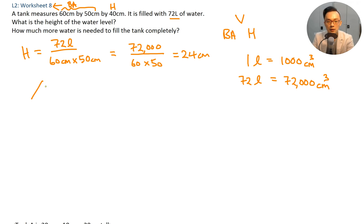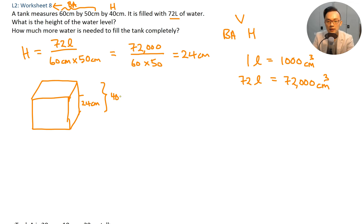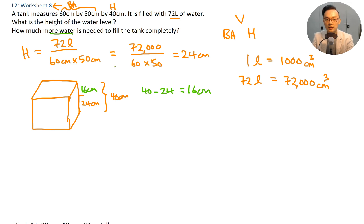In this container, the water is filled to 24 cm, and the whole container height is 40 cm. So the remaining empty part is 40 minus 24 equals 16 cm. There's another 16 cm more. How much more water is needed to fill the tank completely?